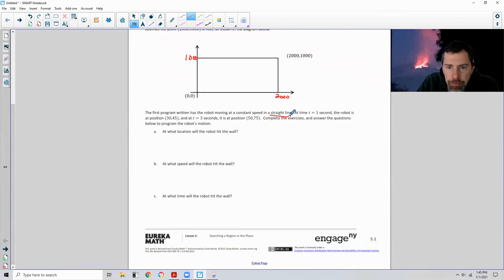The first program written has the robot moving at a constant speed in a straight line. Straight line linear equation from algebra, y equals mx plus b. At time t equals one second, the robot is at position (30, 45). In t equals three seconds it's at position (50, 75). Complete the exercises and answer the questions below to program the robot's motion.